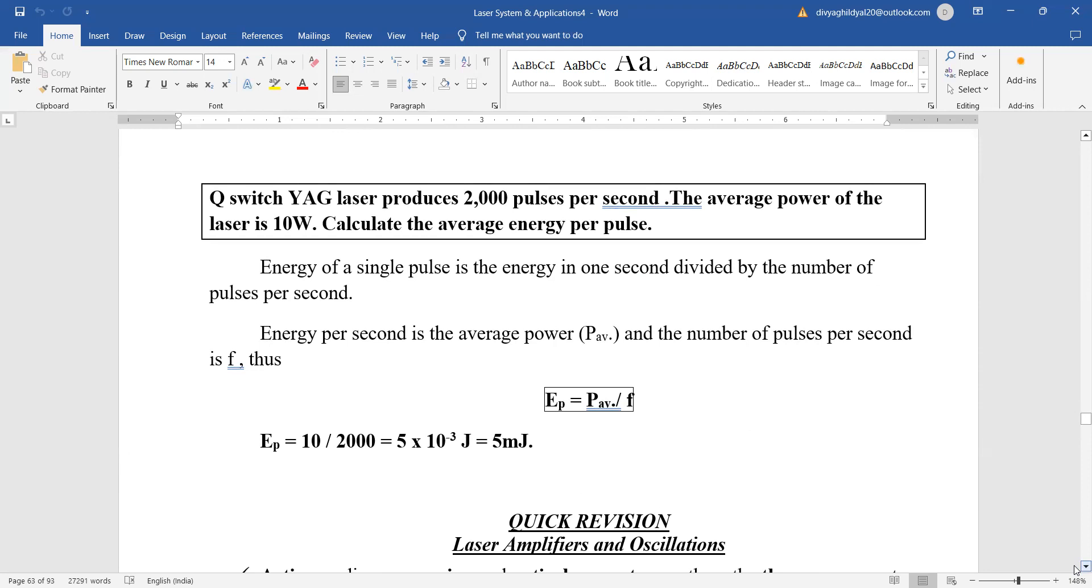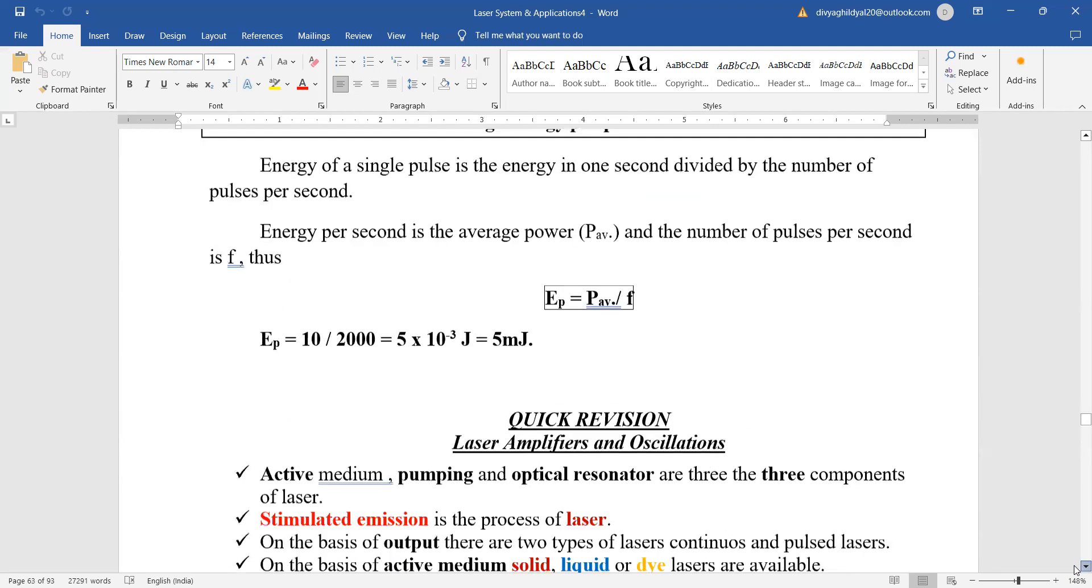Energy of a single pulse is the energy in one second divided by this. So energy is equal to P of average upon F. We put the values and we get the answer.